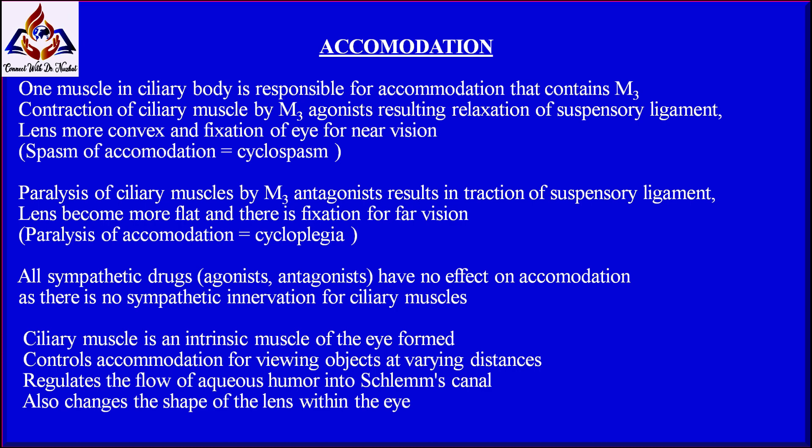All sympathetic drugs — both agonists and antagonists — have no effect on accommodation, as there is no sympathetic innervation for the ciliary muscle. The ciliary muscle is an intrinsic muscle of the eye formed as a ring of smooth muscle in the eye's middle layer, the uvea or vascular layer. It controls accommodation for viewing objects at varying distances and regulates the flow of aqueous humor into Schlemm's canal, and it changes the shape of the lens but not the size of the pupil.